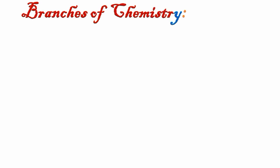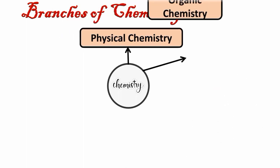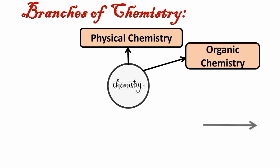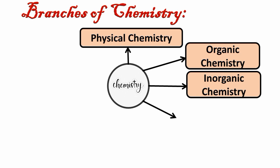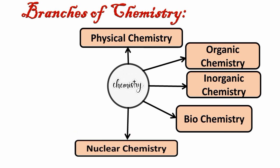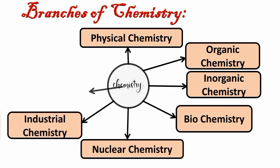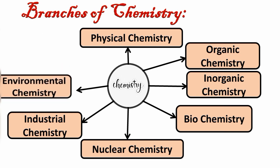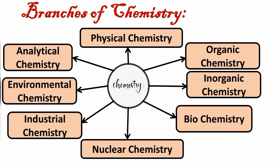Students, as we all know, there are basically eight branches of chemistry named as physical chemistry, organic chemistry, inorganic chemistry, biochemistry, nuclear chemistry, industrial chemistry, environmental chemistry, and at the end we have analytical chemistry.